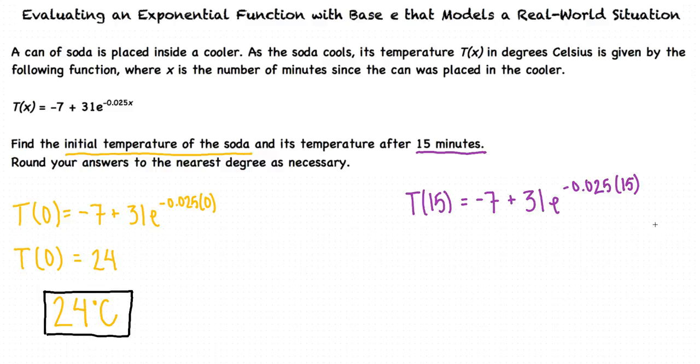T(15) equals negative 7 plus 31 E to the negative 0.025 times 15. And when I solve for the output with my calculator, I get 14.305. The problem asks us to round to the nearest degree, so the answer must be 14 degrees Celsius.